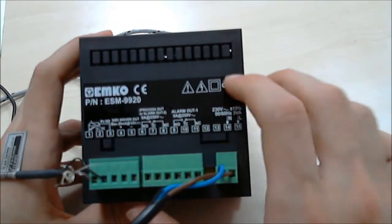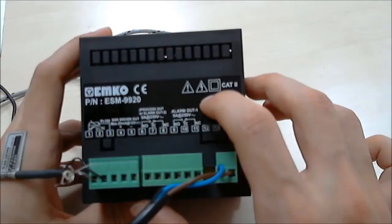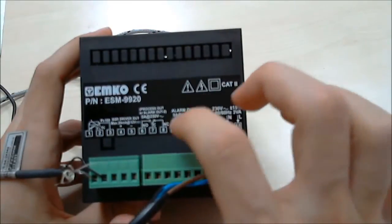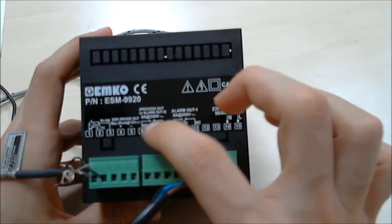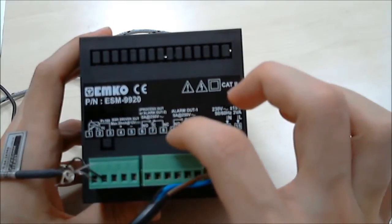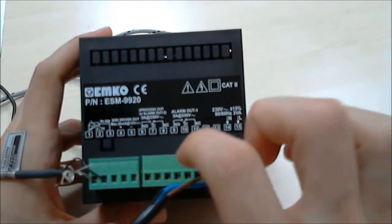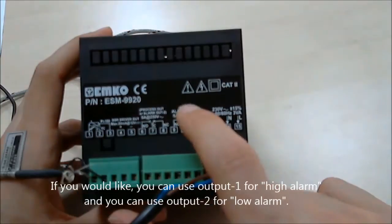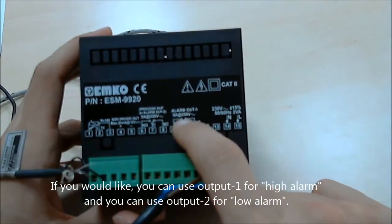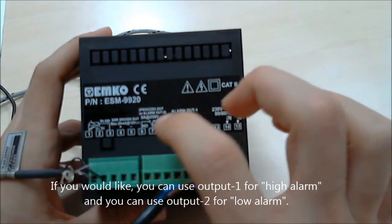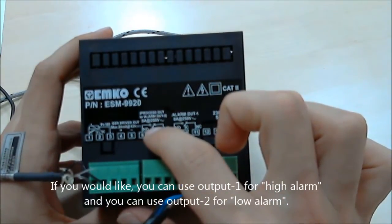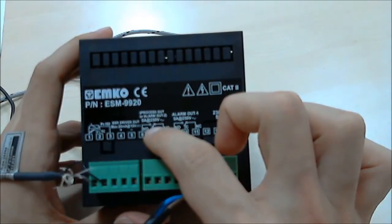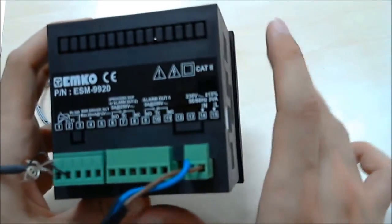But if you select SSR output control by parameters, you can use two outputs together. So you can use alarm output 1 for high process alarm, and you can use alarm output 2 for process output or low alarm control.